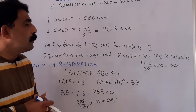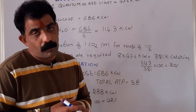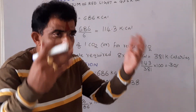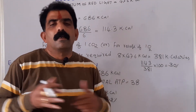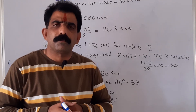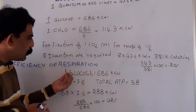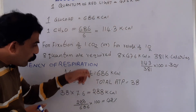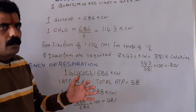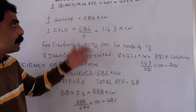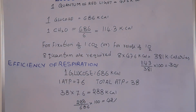To summarize: the efficiency of photosynthesis is 30%, meaning of the total radiant energy absorbed by the plant, only 30% is converted into chemical energy. And the efficiency of respiration is 42%, meaning of the total potential energy content of glucose, only 42% is captured into the ATPs.